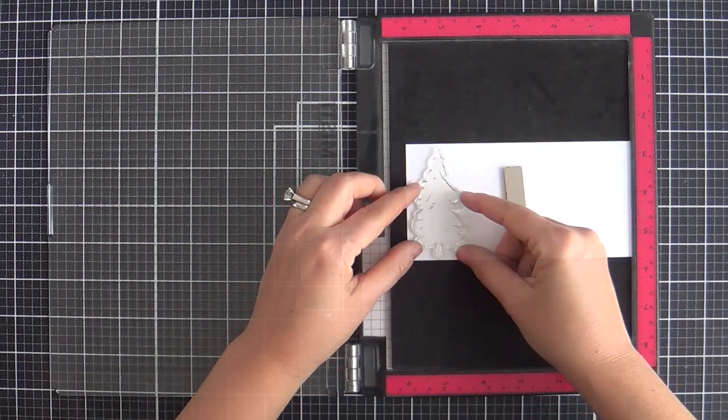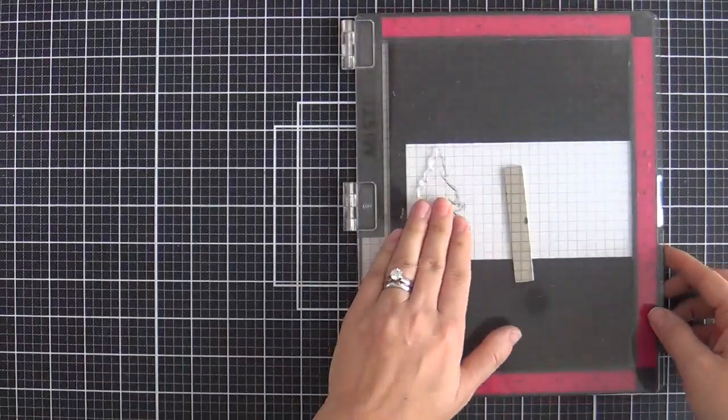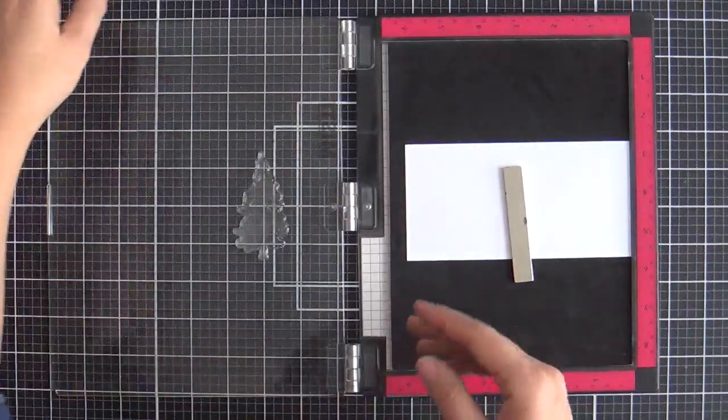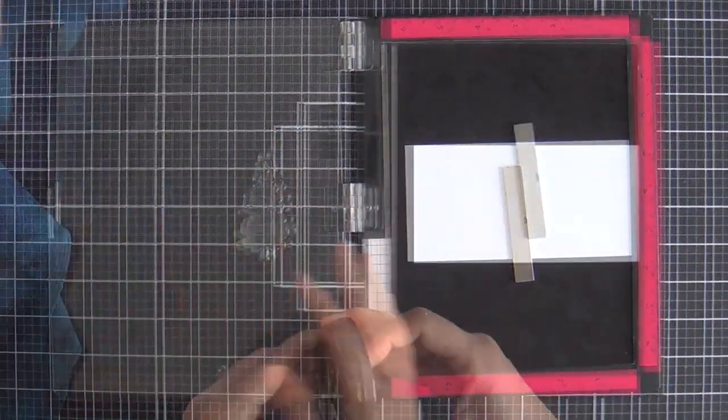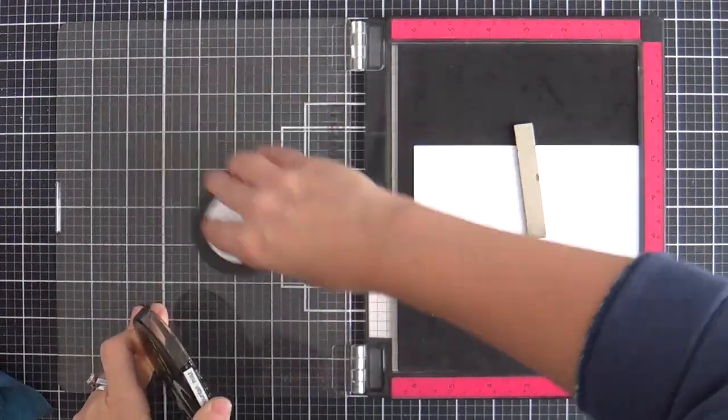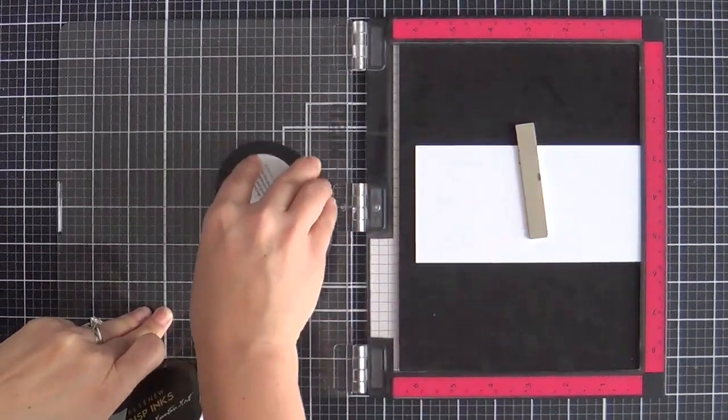I have a panel that is trimmed to fit one of the new delicious mini slimline cards. The envelopes measure three and a half by seven and a half. So I've got my panel trimmed smaller than that.